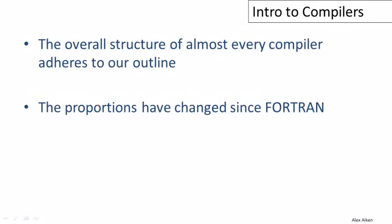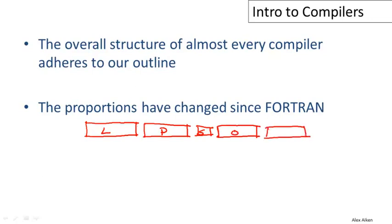To wrap up, almost every compiler has the five phases that we outlined. However, the proportions have changed a lot over the years. If we were to go back to FORTRAN one and look inside of that compiler, we would probably see size and complexity that looks something like this. We have a fairly complex lexical analysis phase, equally complicated parsing phase, a very small semantic analysis phase, a fairly involved optimization phase and another fairly involved code generation phase. We'd see a compiler where the complexity was spread fairly evenly throughout except for semantic analysis, which was very weak in the early days.